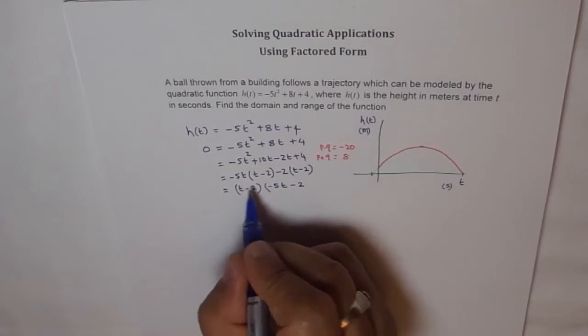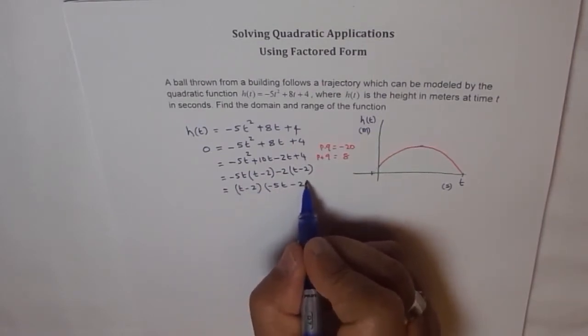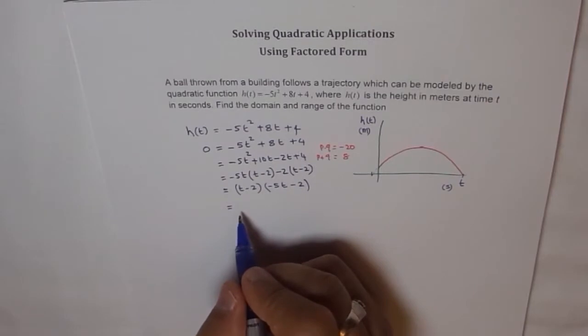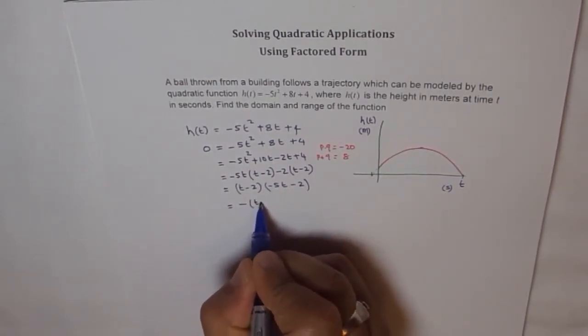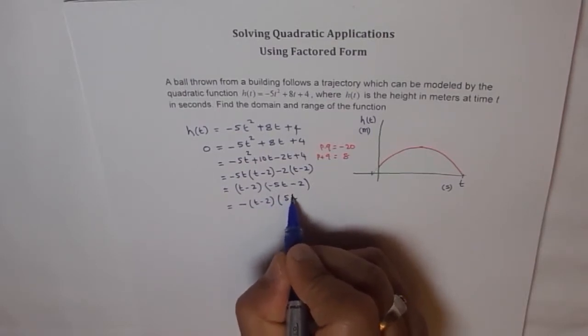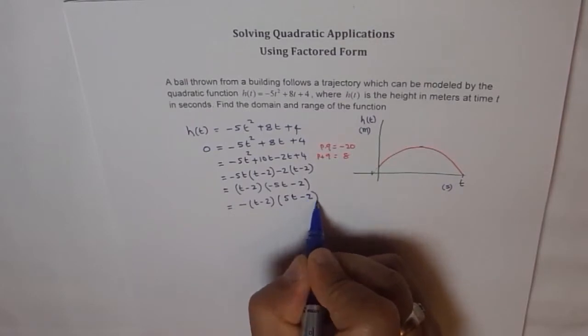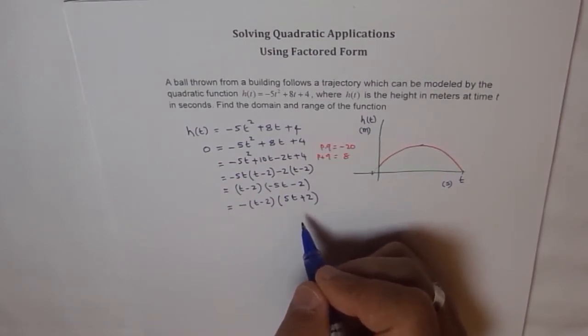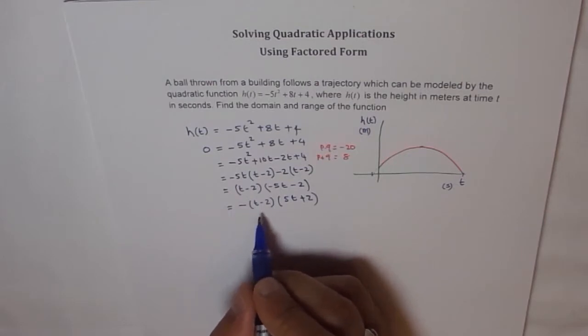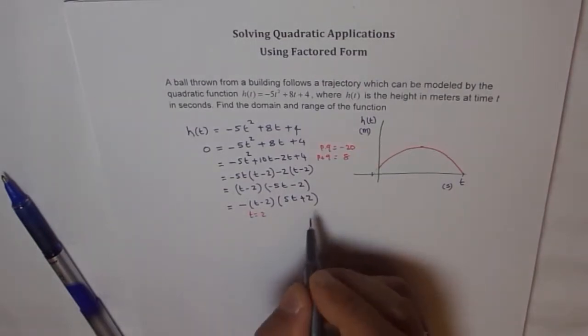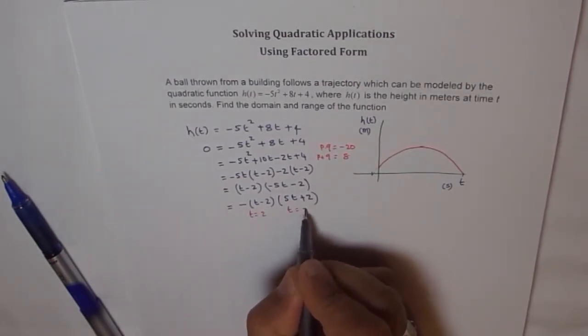We will take minus outside the bracket. So we will take minus of t minus 2 times 5t plus 2. This minus taken out will make it plus, so we are left with these two factors. So h(t) is 0 when t is equal to what? We will equate t minus 2 as 0. From here we get t equals 2. And this factor will be 0 for t equals minus 2 over 5.